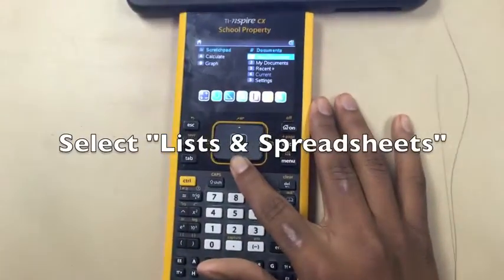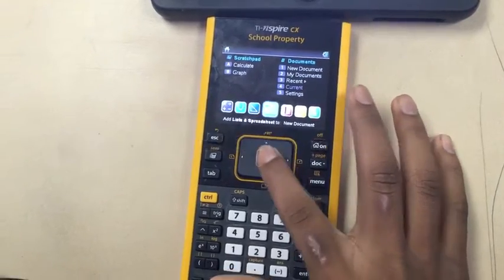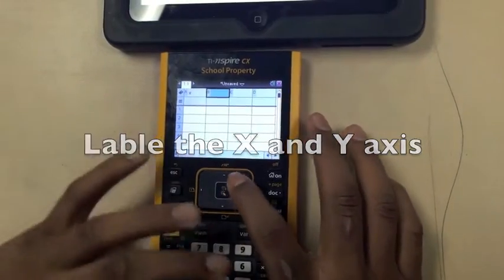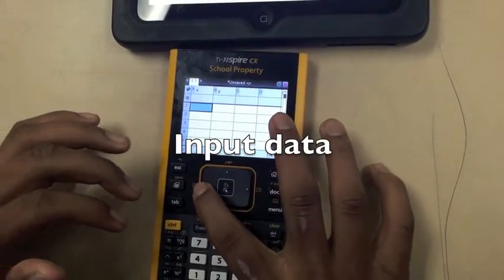First I select Lists and Spreadsheets and I label my x and y-axis, then I input my data.